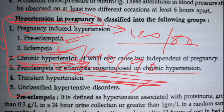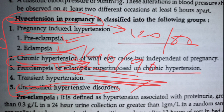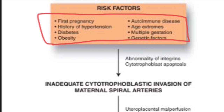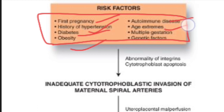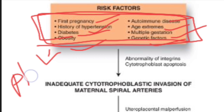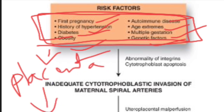Other types: transient hypertension — in the postpartum period within 10-12 days the BP automatically disappears. Unclassified hypertension — the reason is unknown but it occurs. Risk factors for hypertension include first pregnancy, history of hypertension, diabetes, obesity, autoimmune disorders, extreme maternal age (around 35 or above), multiple gestation, genetic factors, and poor or abnormal placental growth.